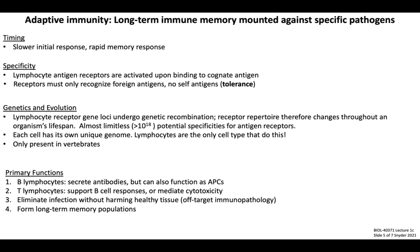The primary functions of the adaptive immune system: adaptive immunity is carried out by two types of lymphocytes, B-lymphocytes and T-lymphocytes. B-lymphocytes are primarily responsible for secreting a type of soluble molecule called an antibody, which can execute a variety of protective functions, but B-cells can also serve as APCs in certain contexts. T-lymphocytes can either support B-cell responses — this subset is called helper T-cells — or execute cytotoxic effector functions, a subset called cytotoxic T-lymphocytes. Both B- and T-cells share the goals of eliminating an infectious pathogen while limiting deleterious inflammation, and can form long-lived memory lymphocyte populations that undergo reactivation upon re-exposure to the same pathogen, forming the basis of immunological memory.